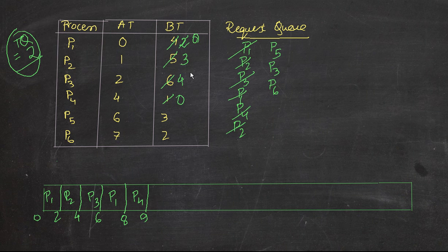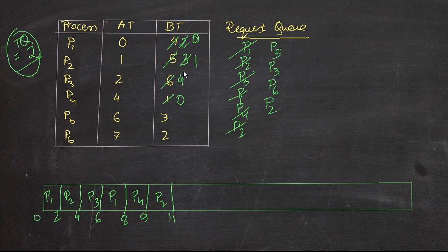Next we go to P2. P2 has 3 units remaining, so we will be completing 2 units only, leaving 1 unit still remaining — running from 9 to 11. So we'll be queuing P2 again. Since all the processes have arrived, we will just be queuing the processes that are remaining right now, not new arrivals, because all processes in the CPU have already arrived.